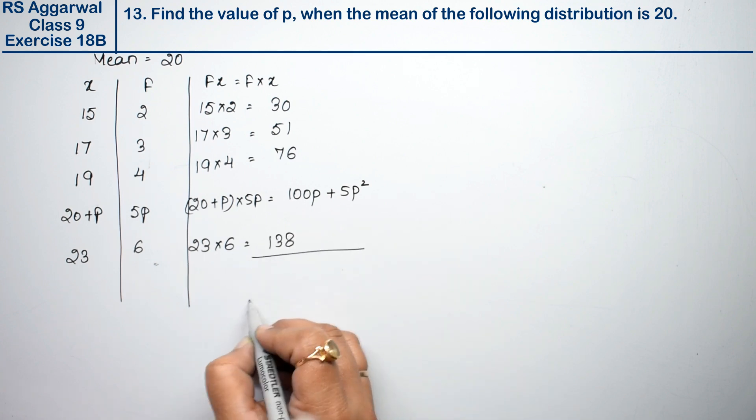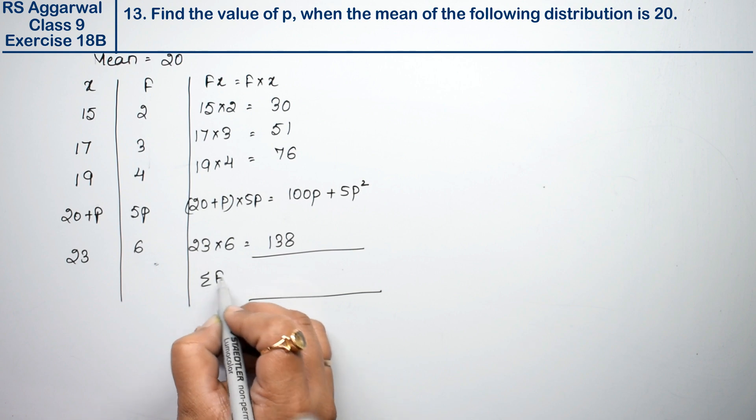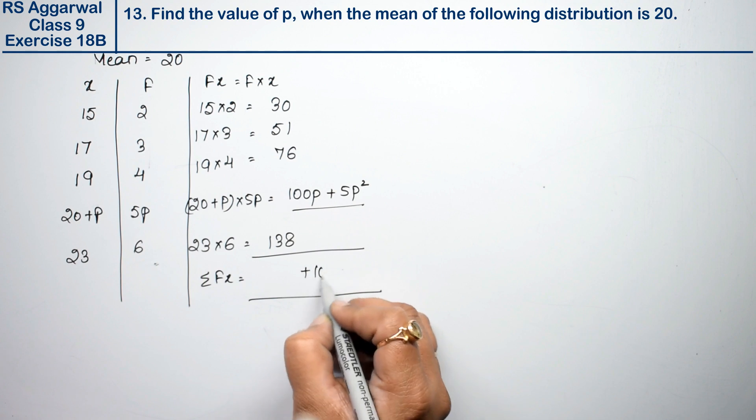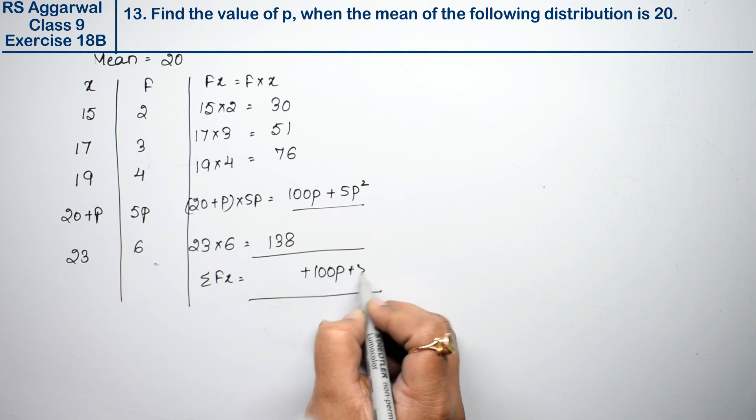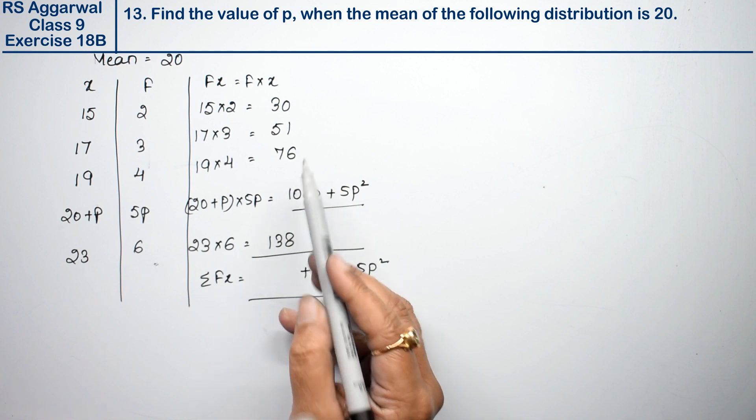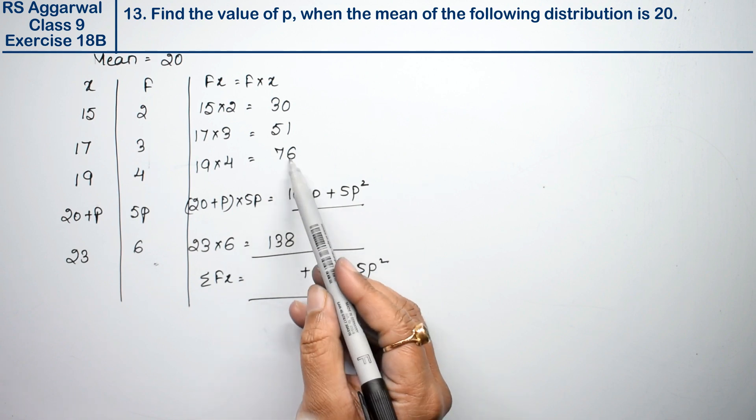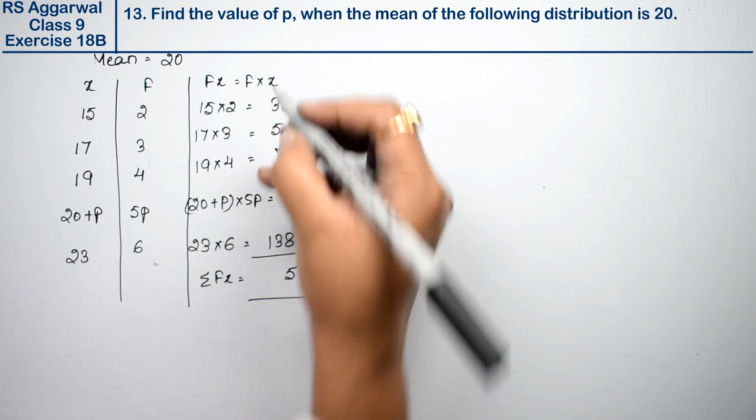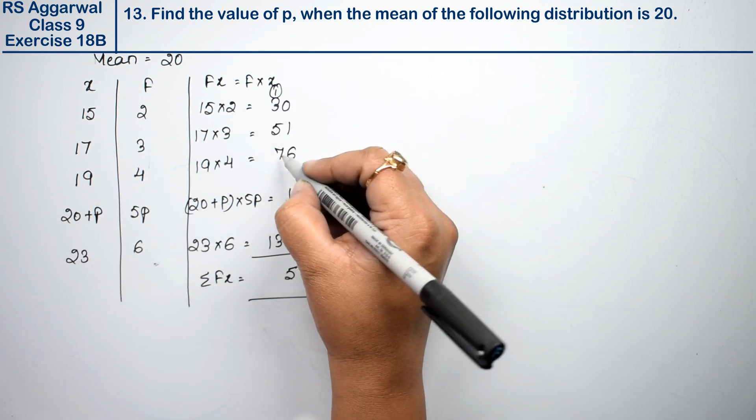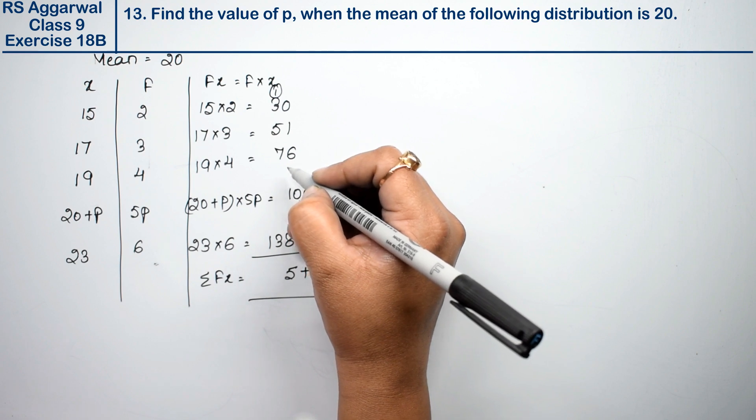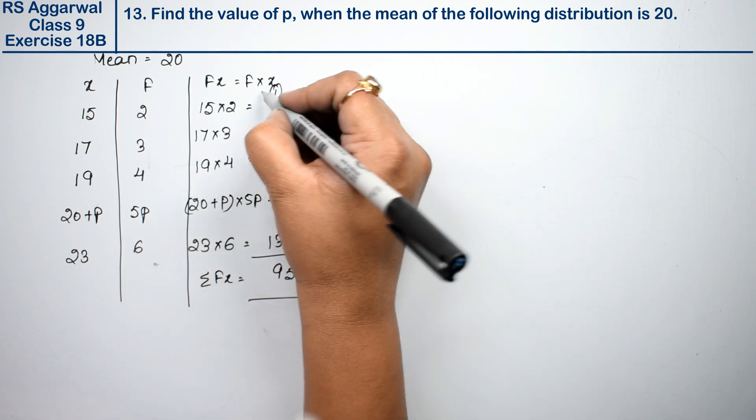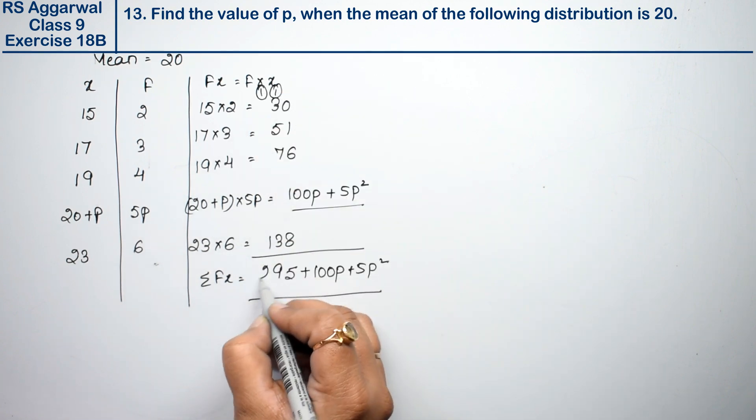Now we need to find sigma fx. Sigma fx equals 100p plus 5p square, plus the sum of the rest. Adding them: 30 plus 51 plus 76 plus 138. That's 295. So sigma fx is 295 plus 100p plus 5p square.